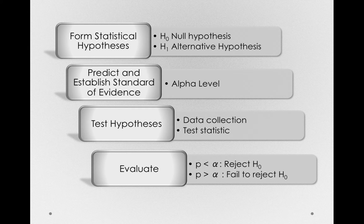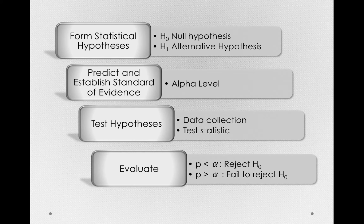Specifically, in this course, we'll be comparing our p-value — our observed proportion more extreme in the sampling distribution — against our standard of evidence, our alpha value. The decision will always be: if our p-value is less than alpha, then we reject the null hypothesis. Remember, when p-values get smaller, that means the result was less likely to happen when chance alone was responsible for the difference.